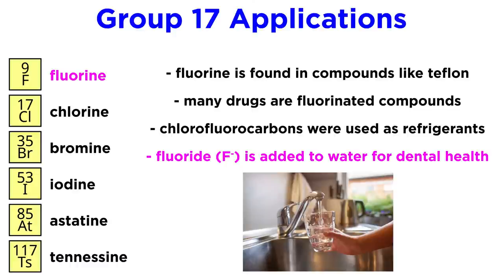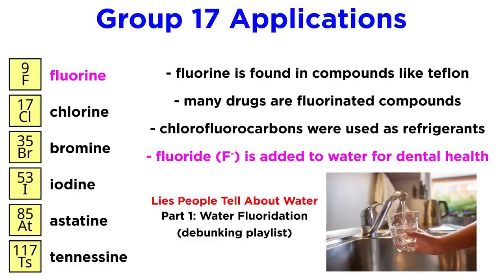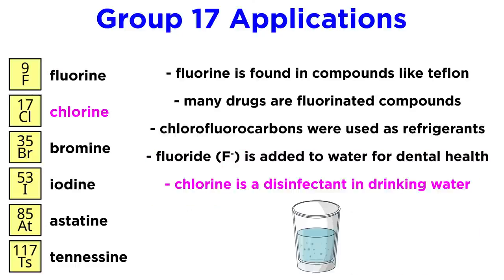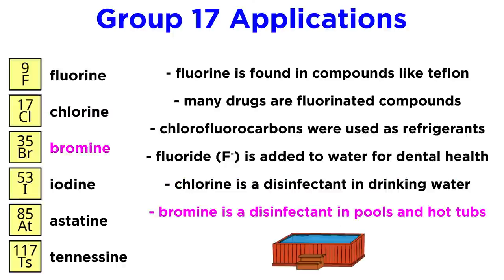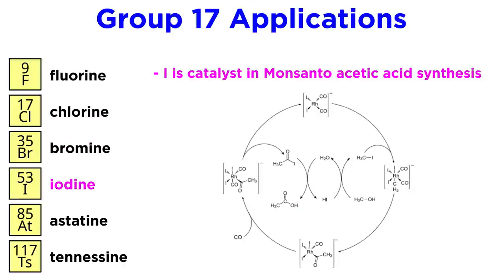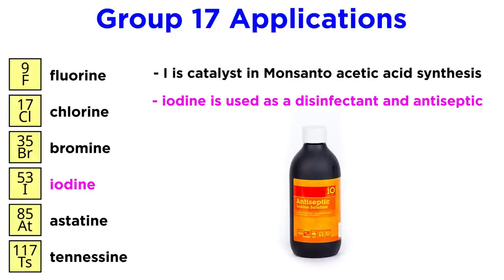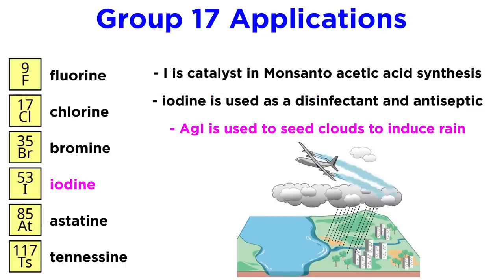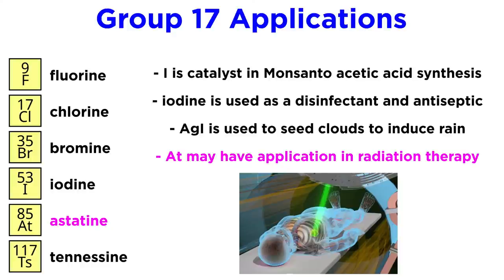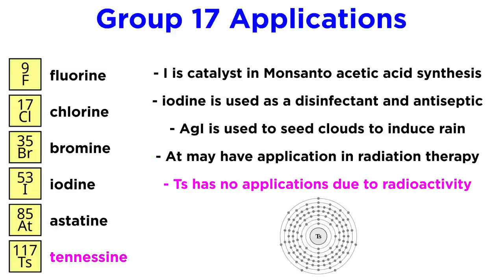Fluoride, the anion of fluorine, is added to many public drinking water supplies to enhance dental health, as we discussed at great length in this video here. Chlorine is used as a disinfectant in community water supplies, while bromine is used as a disinfectant in hot water, like in hot tubs and some pools. Iodine is a co-catalyst in the Monsanto acetic acid synthesis, which we will cover later in the series. It is also used as a topical disinfectant, while iodine in alcohol solution is used as an antiseptic. Silver iodide is used in seeding clouds to induce rain. Astatine has no known applications, though it is under investigation as to whether it has utility in radiation therapy for prostate cancer. And tennessine, as one might imagine, has no applications due to its extremely short half-life.